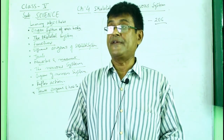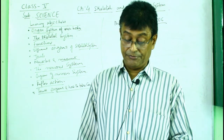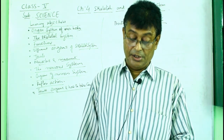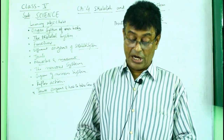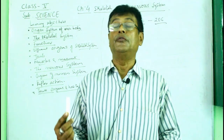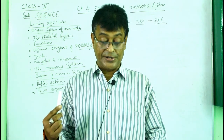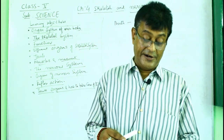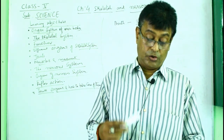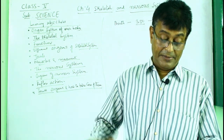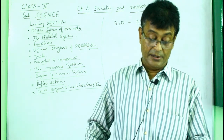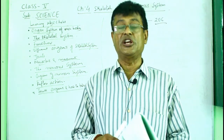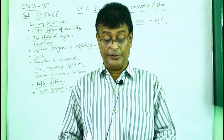The vertebral column has different sections: the first is cervical vertebra, the second is thoracic vertebra, the third is lumbar vertebra, the fourth part is sacrum, and then coccygeal vertebra for the tail.